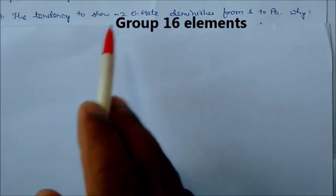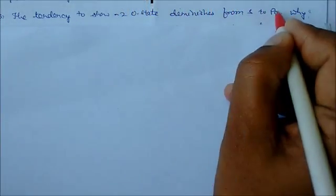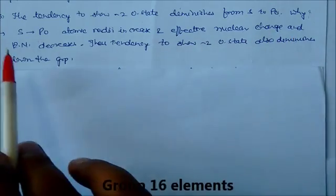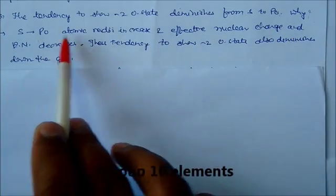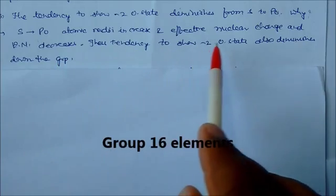The tendency to show -2 oxidation state diminishes from sulfur to polonium. Down the group, atomic radii increase while effective nuclear charge and electronegativity decrease. Therefore, the tendency to show -2 oxidation state also diminishes down the group.